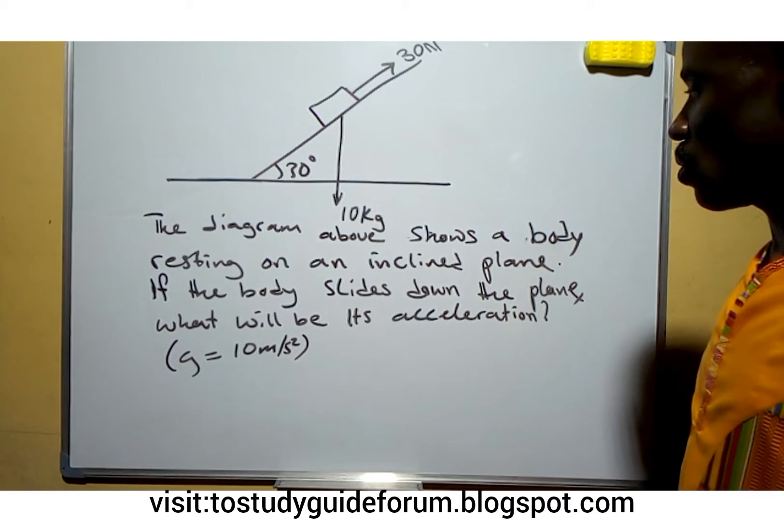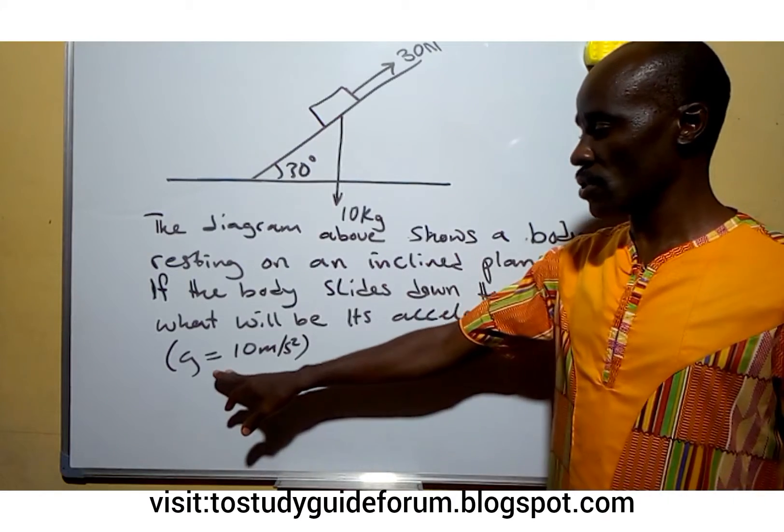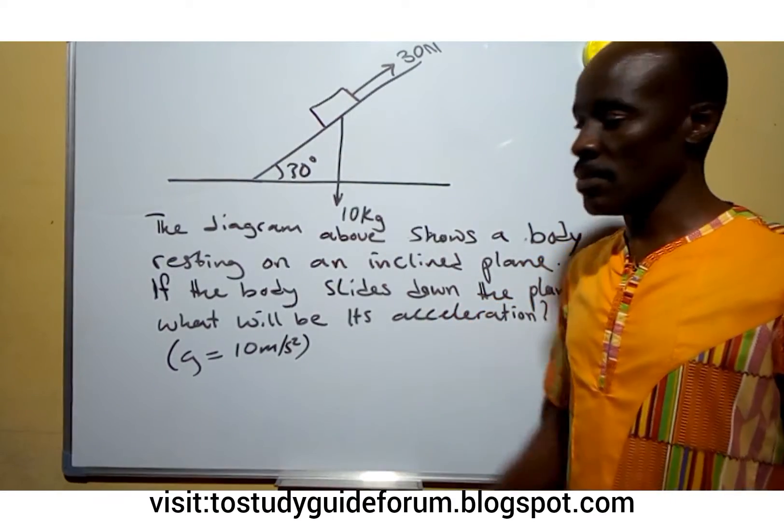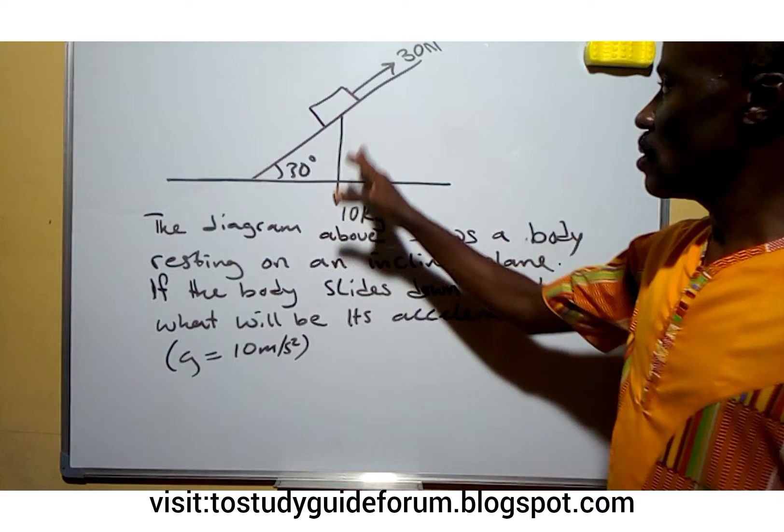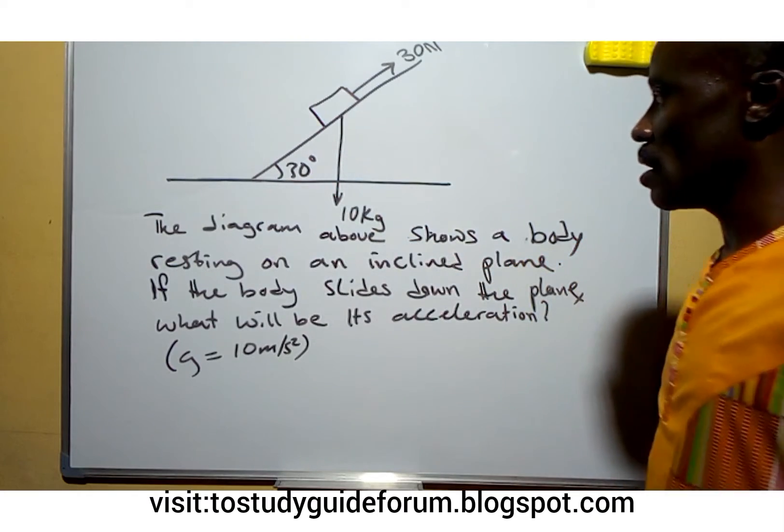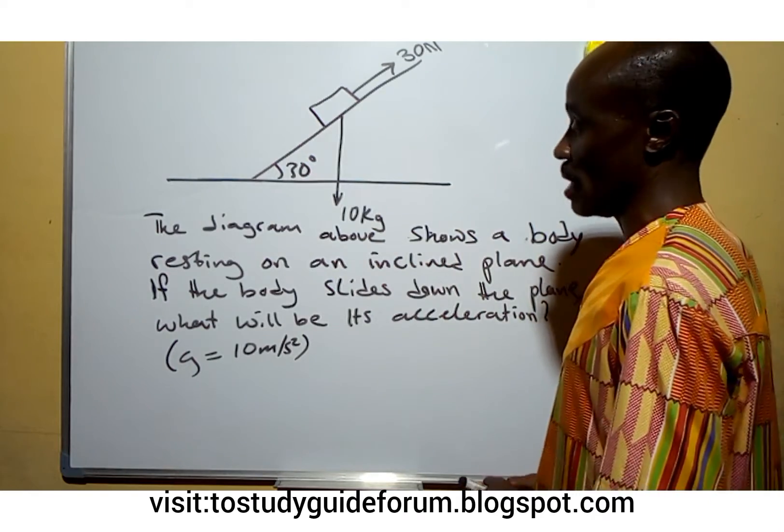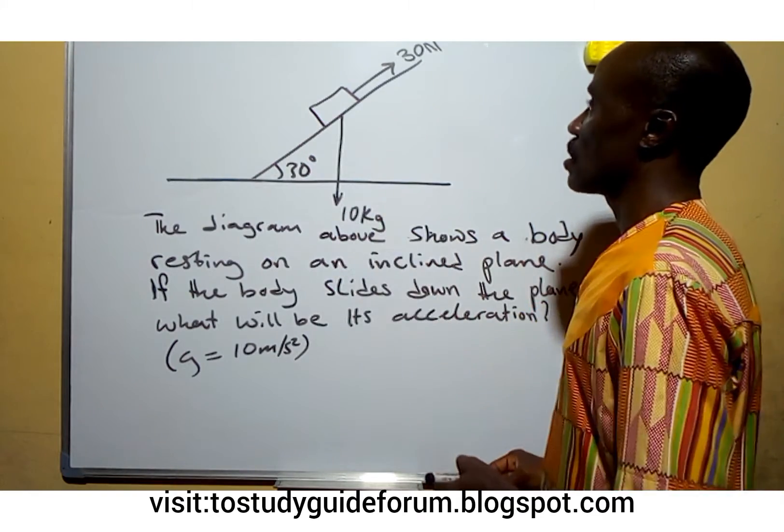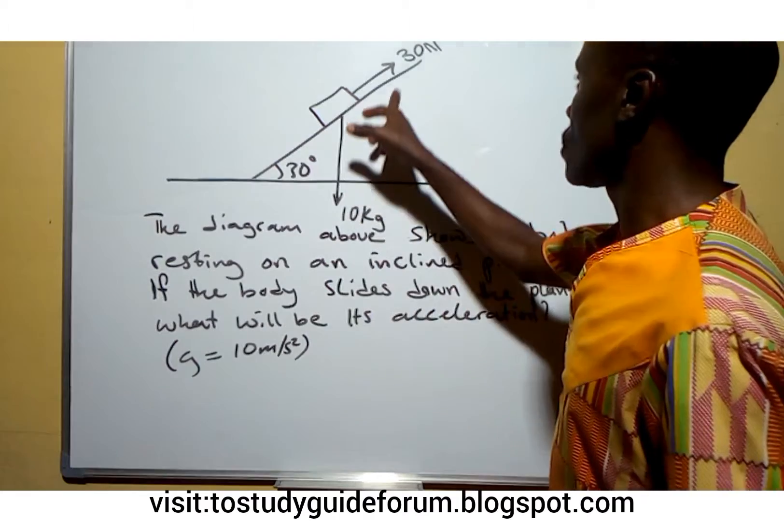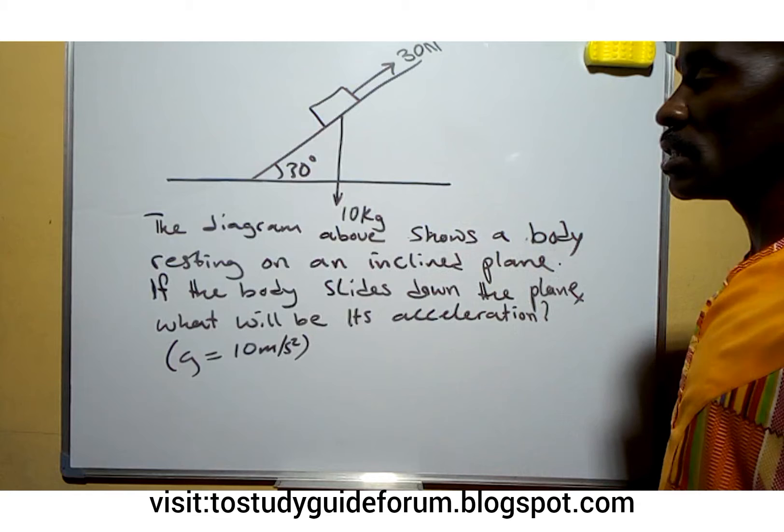We are given g as 10 meters per second squared. Looking at the body, notice that the incline is 30 degrees and the mass of the body is 10 kg. Then the resistance force that is there is 30 newtons.